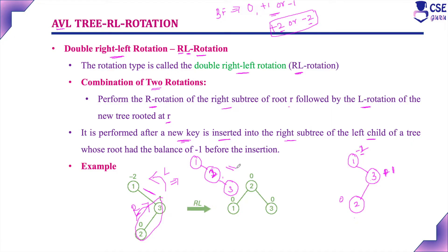Then we perform a left rotation at the root. Performing the left rotation after the right rotation: node 2 becomes the new root node, node 1 becomes the left child of 2, and node 3 becomes its right child. Checking the balance factor, it is 0 for all nodes — the tree is balanced. This is now an AVL tree.